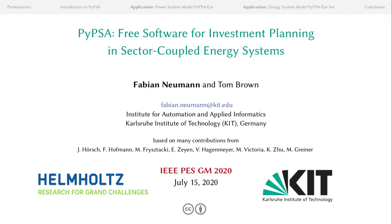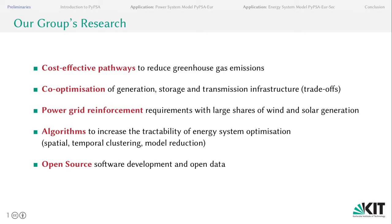My name is Fabian and I'm a PhD student in the group of Tom Brown at the Institute of Automation and Applied Informatics at the Karlsruhe Institute of Technology in Germany. In our group, we research the most cost-effective pathways to reduce greenhouse gas emissions, and we usually do this by co-optimization of all the infrastructures involved, such as generation, storage and transmission, to assess the multitude of trade-offs involved. We specifically also consider power grid reinforcement and look at the requirements as large shares of wind and solar generation enter the system.